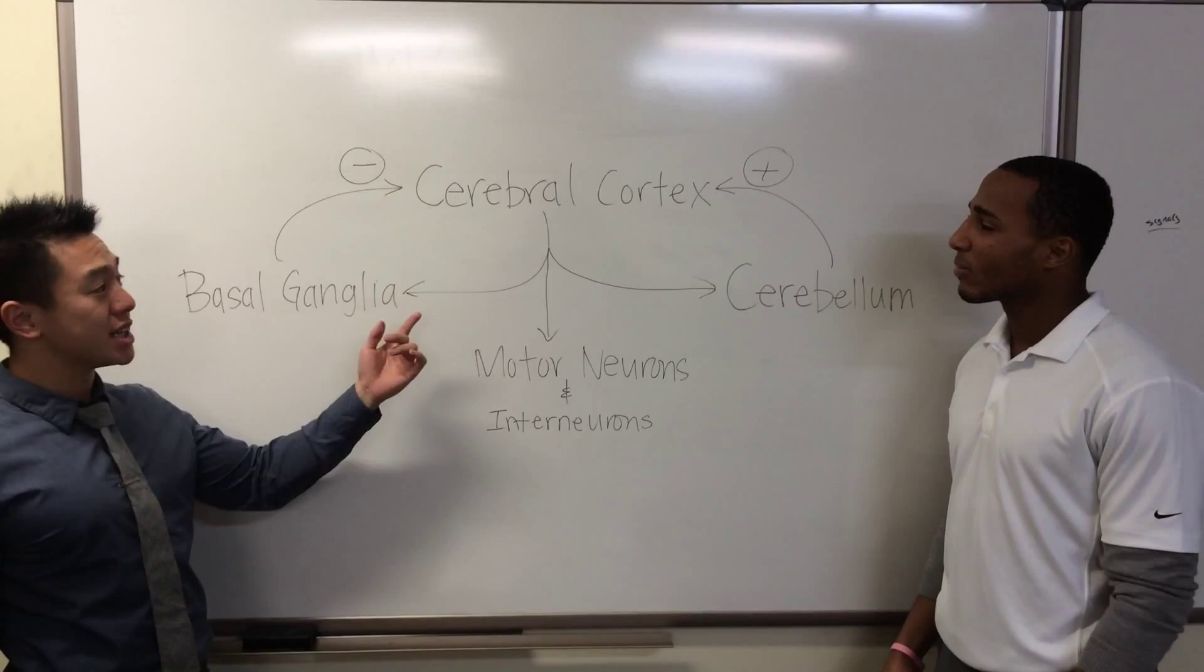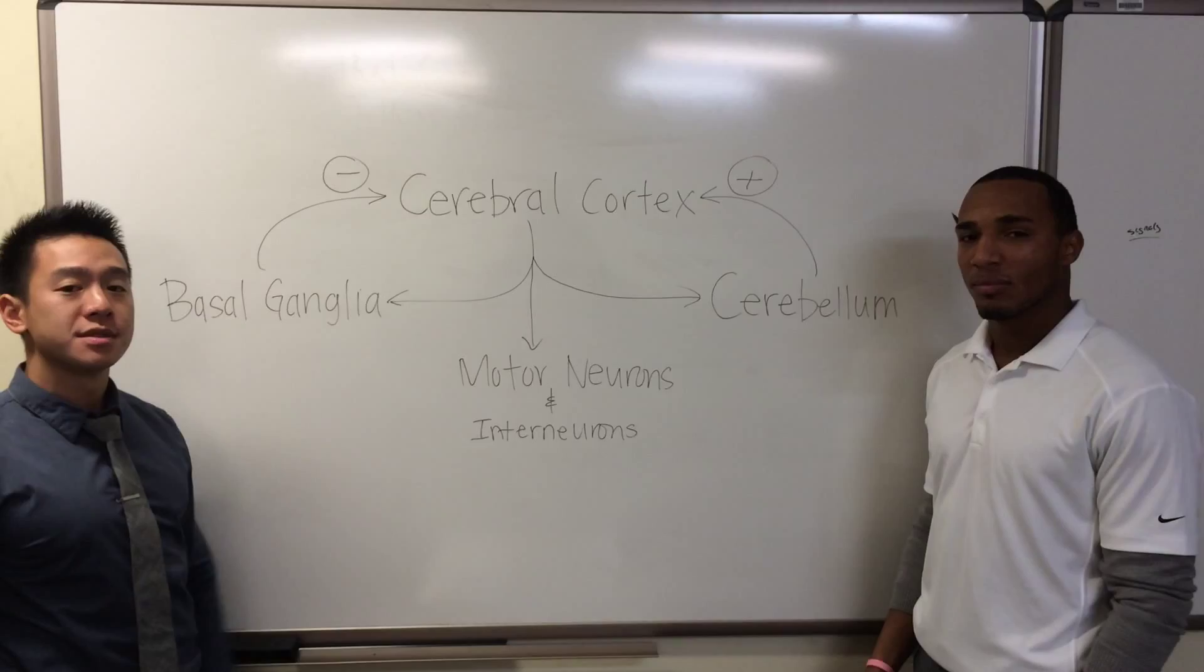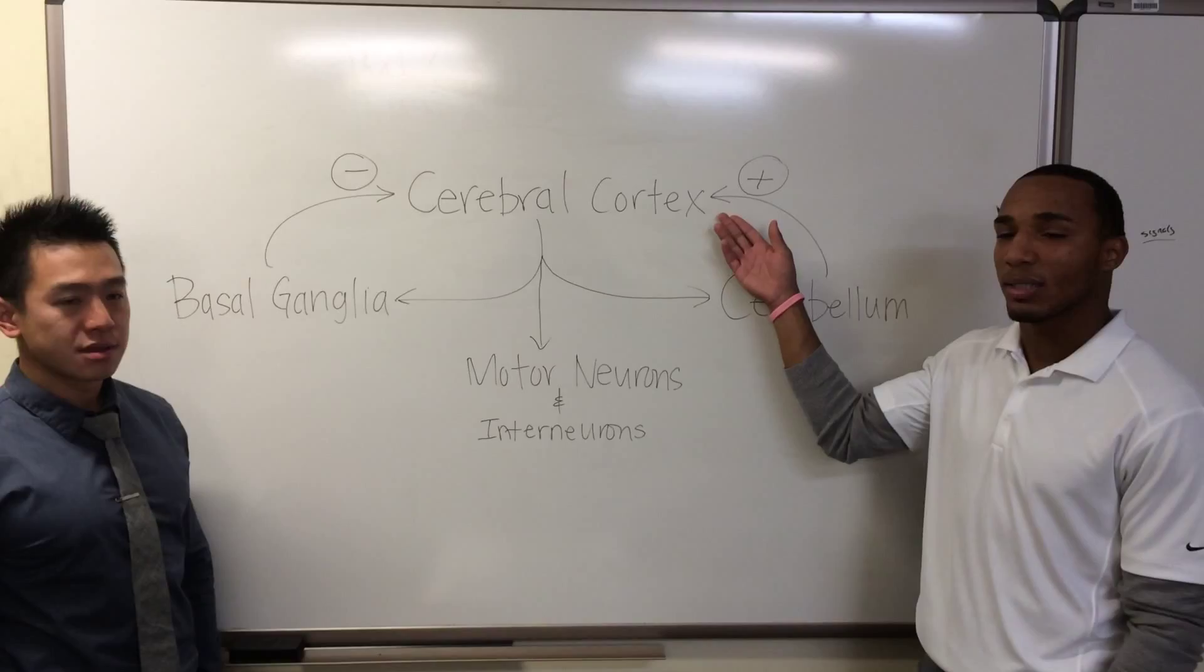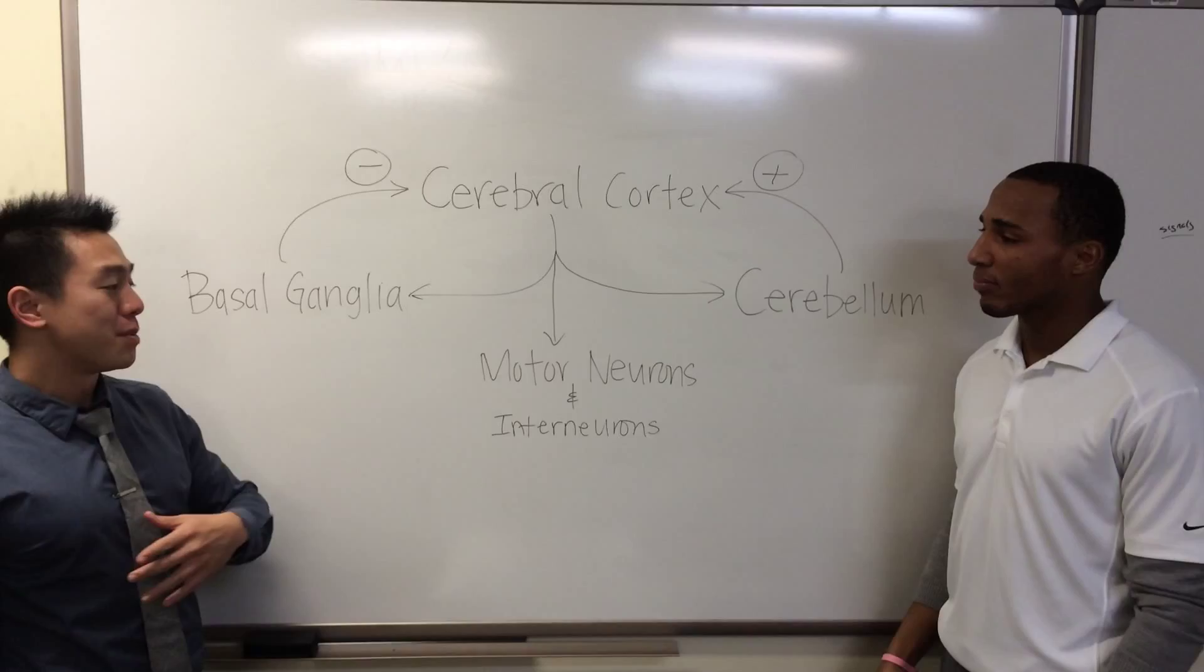What you see here is a basic schematic of what actually happens in the human brain when you try to initiate some type of movement. So the cerebral cortex is going to send chemical messengers and neurotransmitters to both the basal ganglia and the cerebellum. The cerebellum is responsible for sending excitatory signals to the cerebral cortex. And the basal ganglia will send inhibitory signals to the cerebral cortex.